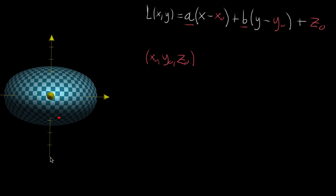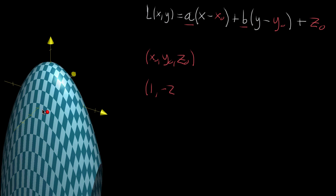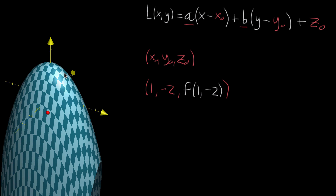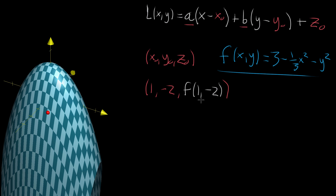Instead of specifying any three numbers in space, because you have to make sure the point is somewhere on the graph, you instead only specify two — the x-coordinate and the y-coordinate. Let's say the x-coordinate is one and the y-coordinate is negative two. Then the z-coordinate is forced to be whatever the output of the function is at (1, −2), because this is a graph. The function f(x, y) = 3 − (1/3)x² − y² gives us this graph.